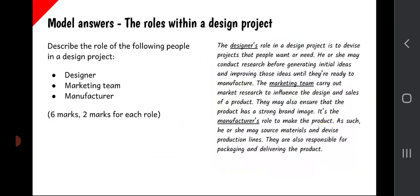Finally, we're going to look at a model answer on the roles within a design project. This is a fairly typical past paper question. The question asks: describe the role of the following people in a design project — the designer, the marketing team, and the manufacturer. The role simply means their job — what do they do in a design project? But for full marks the question is also looking for you to describe how they are interconnected. This question has six marks attached to it, so it's reasonable to assume two marks for each role, meaning two different points per role.